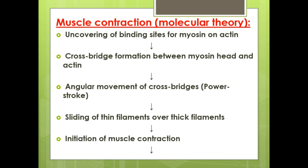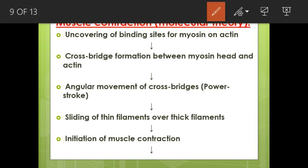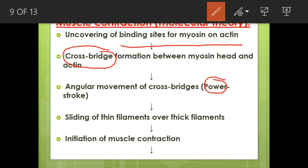In the molecular theory of muscle contraction, binding of calcium uncovers the myosin binding sites on actin. Cross-bridges form between the myosin head and actin, followed by angular movement of the cross-bridge — the power stroke — causing sliding of thin filaments over thick filaments, shortening the sarcomere and initiating muscle contraction.